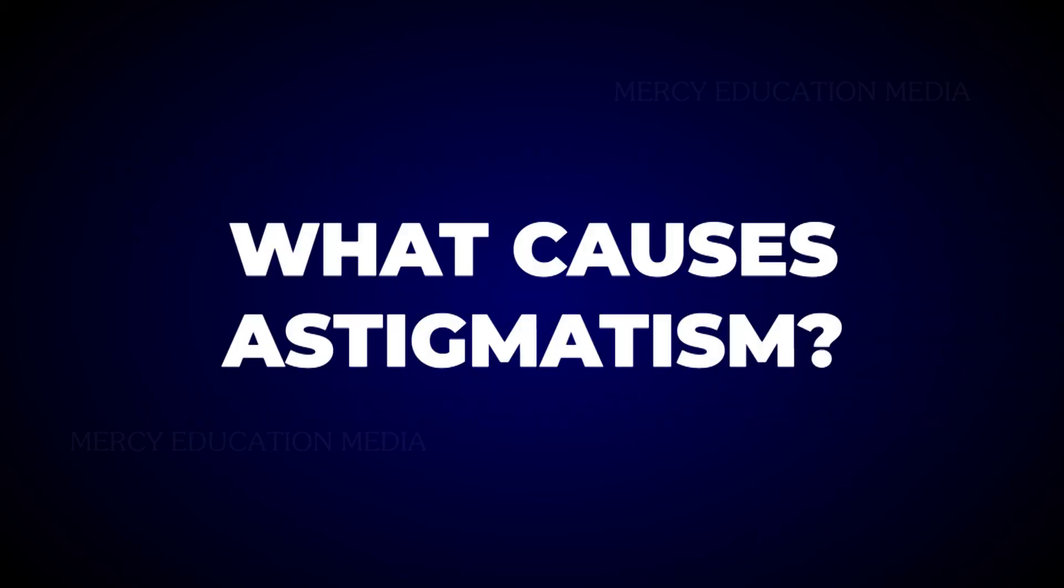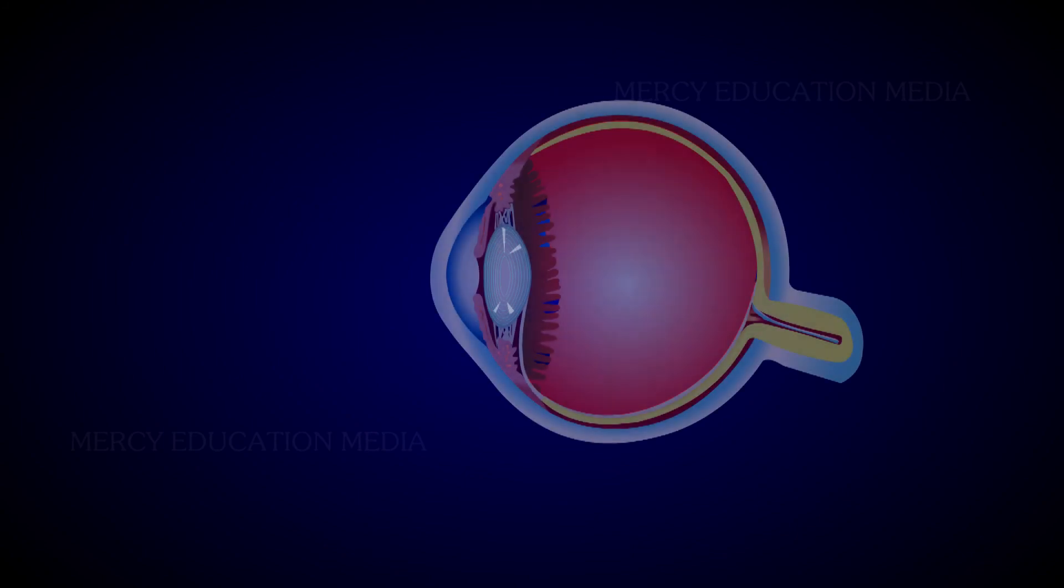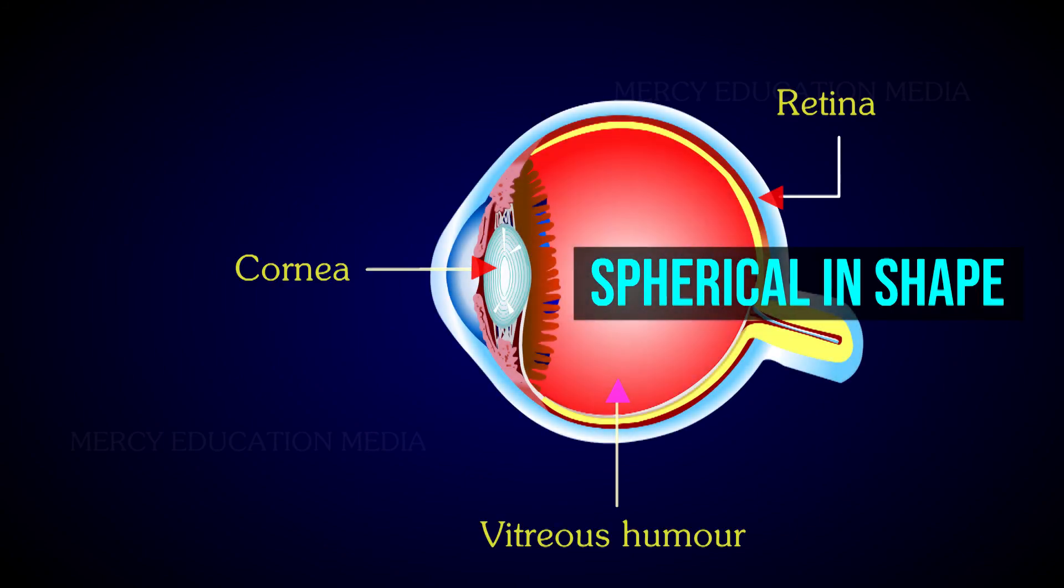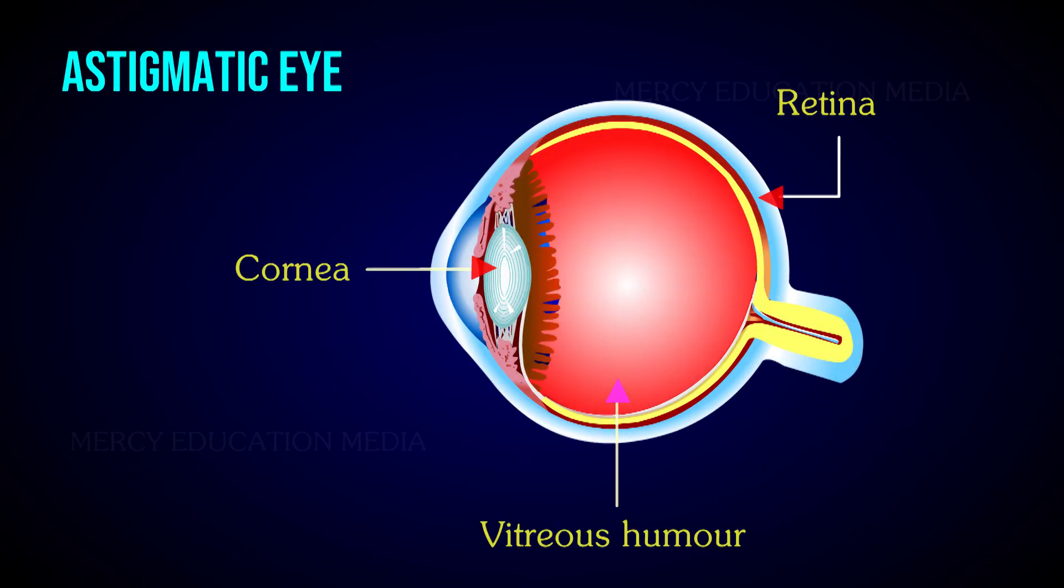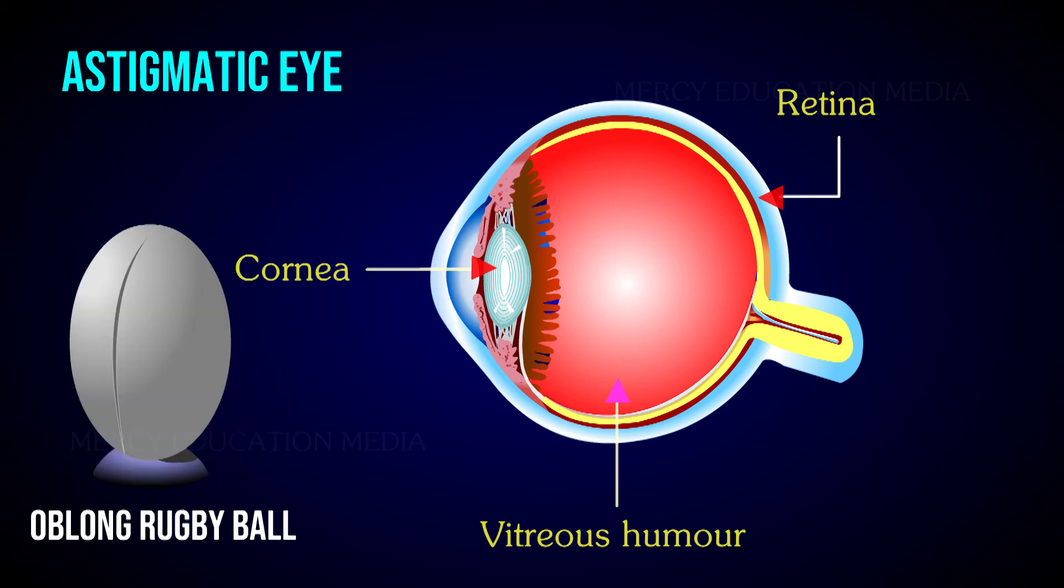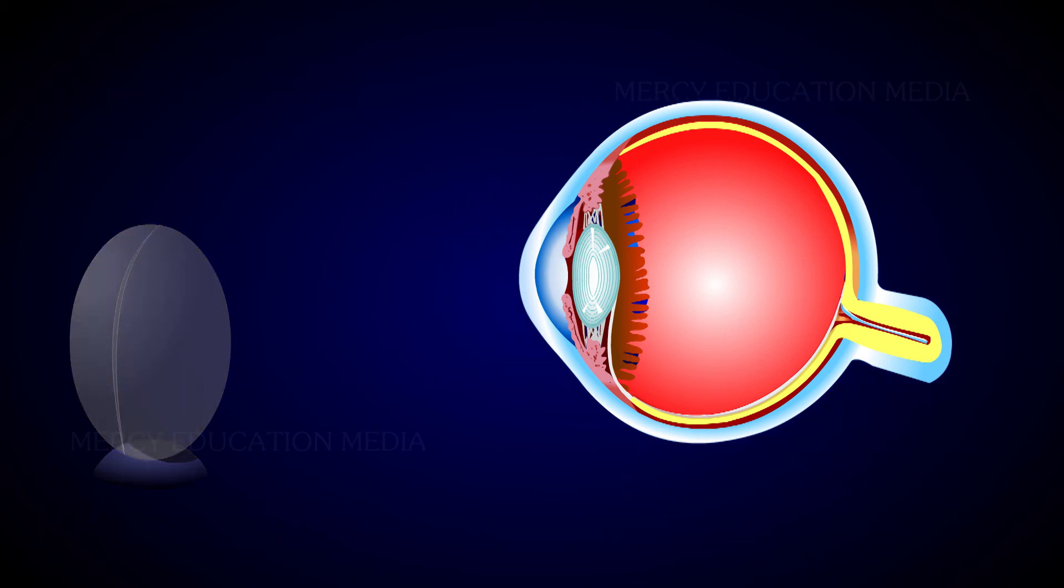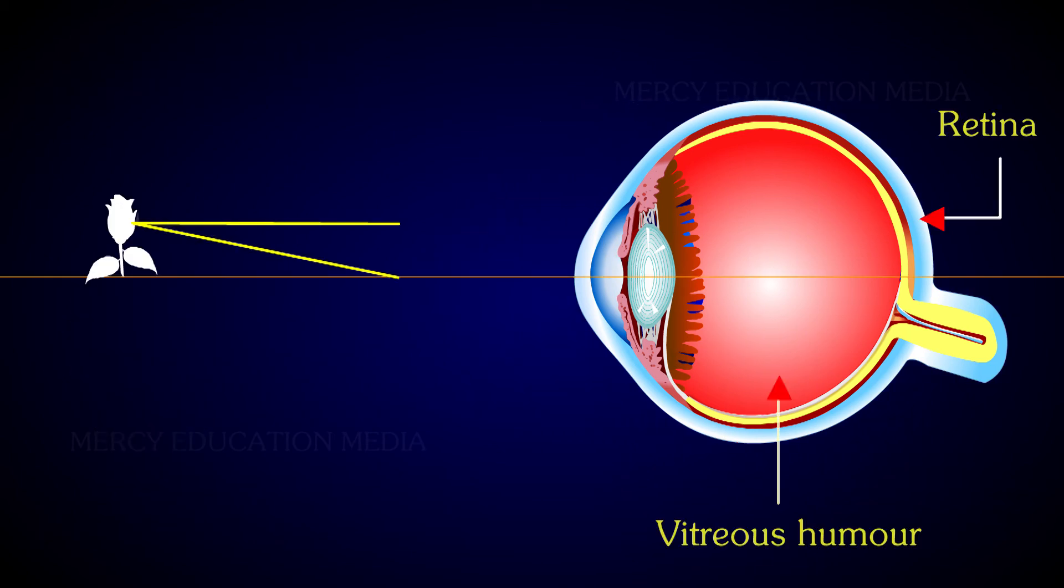What causes astigmatism? Normally, the cornea is spherical in shape, but in an astigmatic eye, the cornea is shaped more like an oblong rugby ball. The oblong shape causes the light rays to focus on two points rather than on just one point.